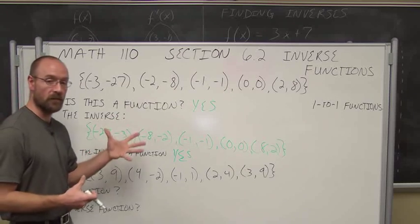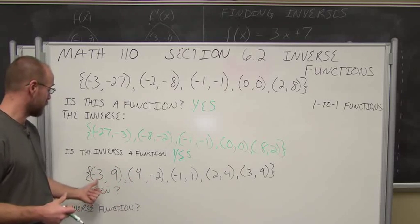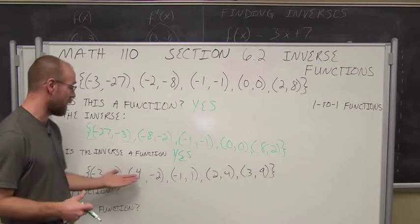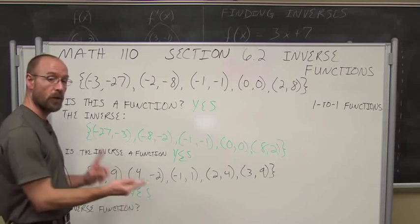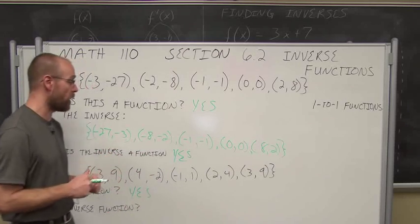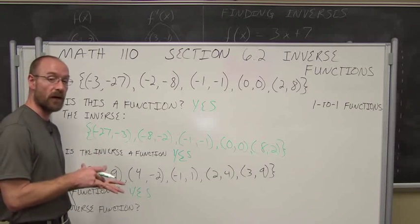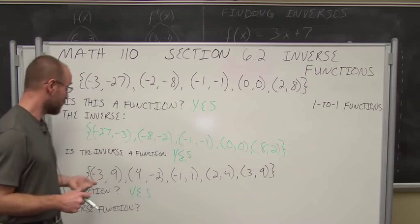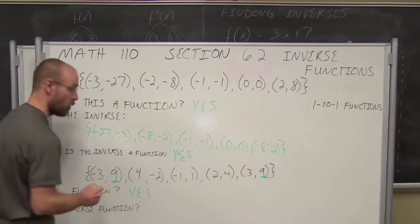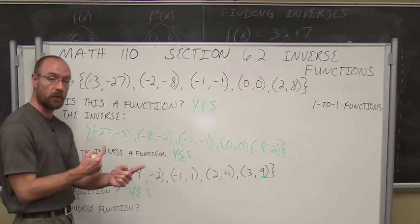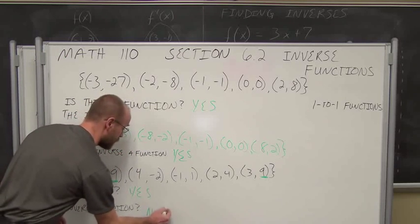Let's look at this next relation. Is it a function? Negative 3, 4, negative 1, 2, 3 — the x values do not repeat, so this is a function. Now, is its inverse a function? The new x values come from the y's. The y value 9 repeats in our original function, so if we flip the points, our new x value will repeat — which means its inverse is not a function.